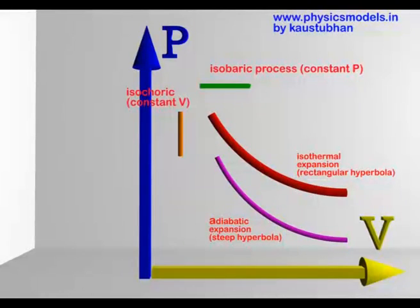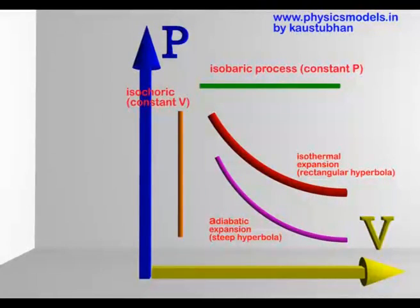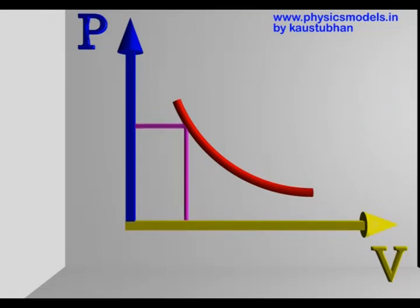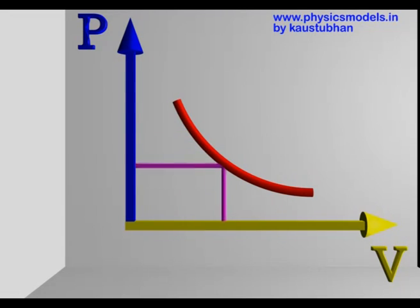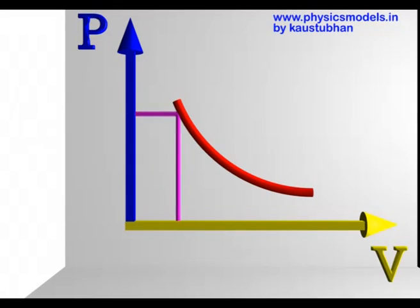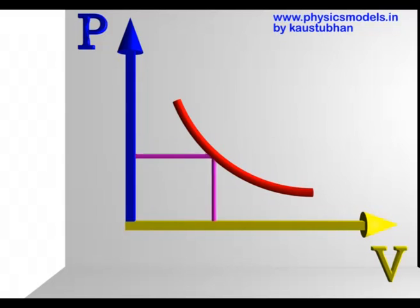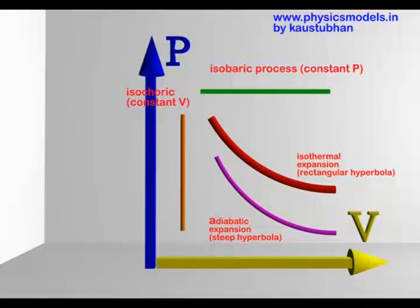The other two graphs are hyperbolic graphs — the red and violet. The red one is isothermal, constant temperature. The bottom one is adiabatic, no heat exchange. Coming to these hyperbolic graphs, you can see here in this animation that as the volume increases in that cylinder and the piston is moving out, the pressure is reducing quite quickly along that graph. Please do get a feel of the pressure volume relationships.